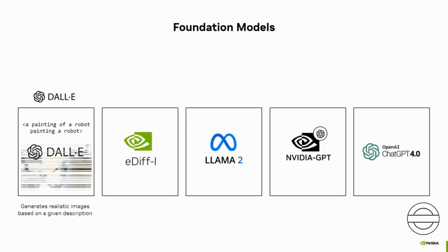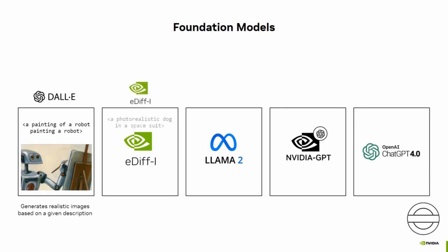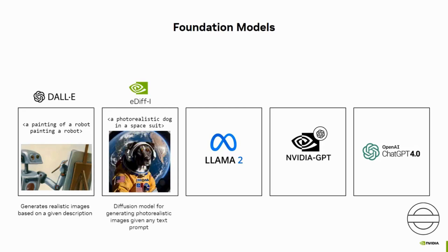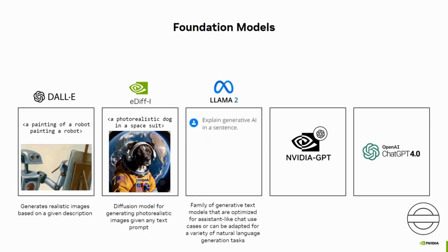DALL-E creates realistic images from text descriptions and can be used for image synthesis tasks such as image captioning, image editing, or image manipulation. EDIFI is a diffusion model for synthesizing images given text, which generates photorealistic images corresponding to any input text prompt. LAMA 2 can be used for generating diverse and high-quality natural language text, making it valuable for various tasks such as content creation, language understanding, and conversational AI applications.